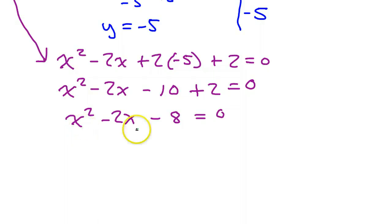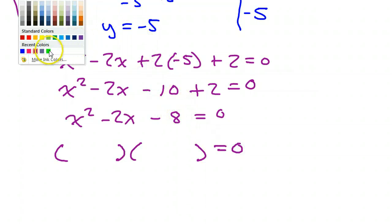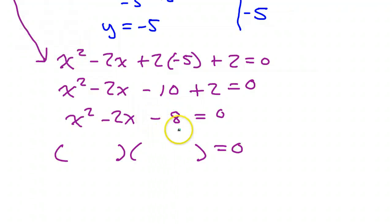So, this looks like the type of thing that we factor all the time. So, let's go ahead and factor this. Looking at that 8, I'm thinking it's either going to be 2 times 4 or it's going to be 1 times 8. Those are the possibilities.